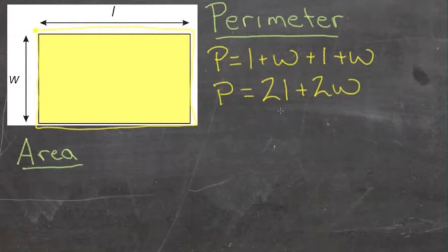Using the distributive law, we can actually pull the two out, since both letters are multiplied by the same number, and we get the most concise version, which would be P equals two times the quantity L plus W.